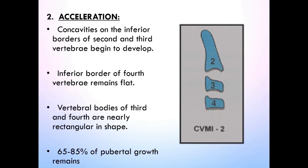Stage 2 is Acceleration. A concavity is present at the lower border of C2, and C3 begins to develop, with the absence of a concavity at the lower border of C4. The bodies of both C3 and C4 are nearly rectangular in shape. 65–85% of pubertal growth remains. The peak in mandibular growth will occur on average one year after this stage.